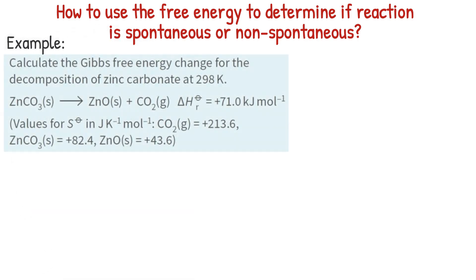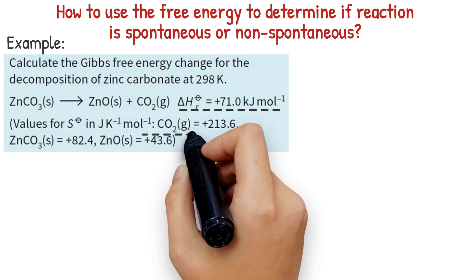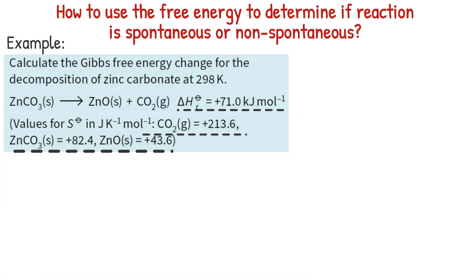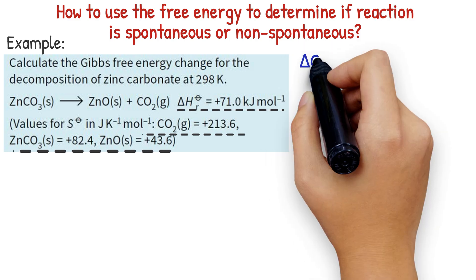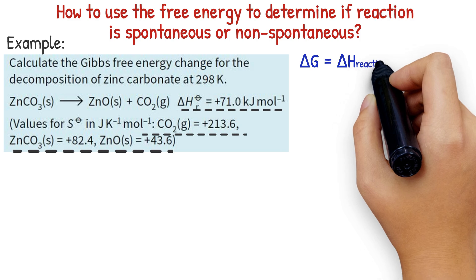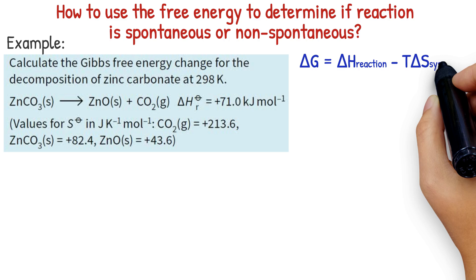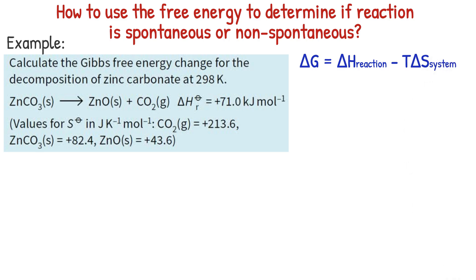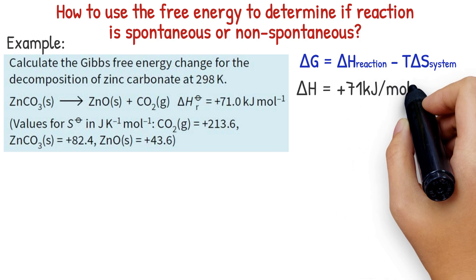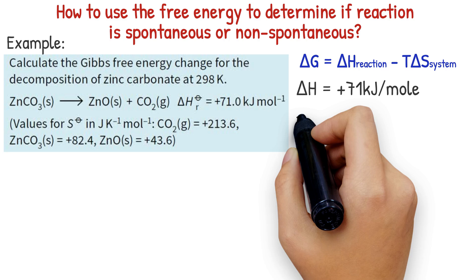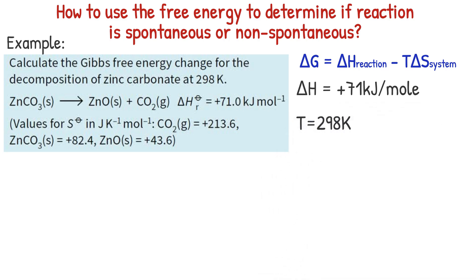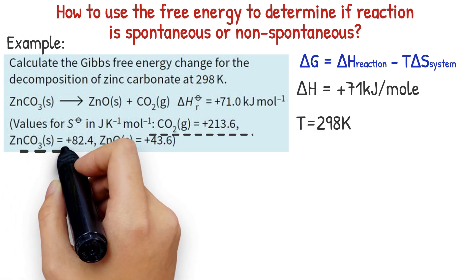Example 1: Calculate the free energy change for the decomposition of zinc carbonate at 298 Kelvin. The enthalpy change of reaction and the entropy values for each compound in the reaction are given. The free energy, noted by delta G, is equal to the enthalpy change of the reaction minus temperature multiplied by the entropy change of the system. The enthalpy change equals 71 kilojoule per mole, and temperature equals 298 Kelvin. We don't yet have the entropy change of the system, so we need to calculate it.